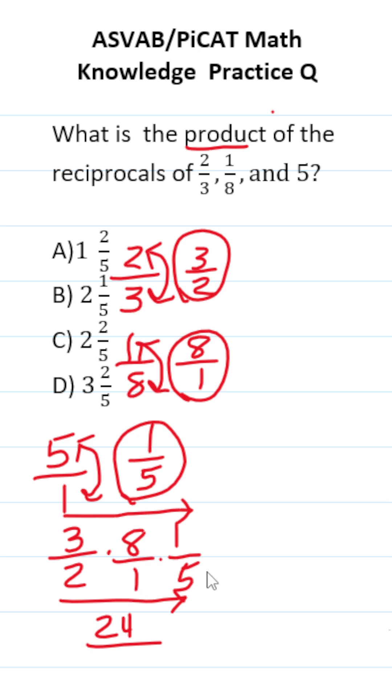2 times 1 is going to be 2 times 5 is 10. So our answer is 24 over 10.